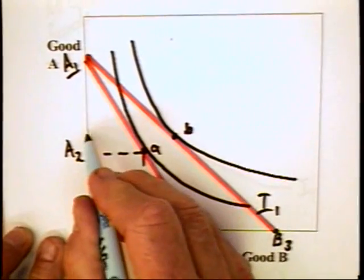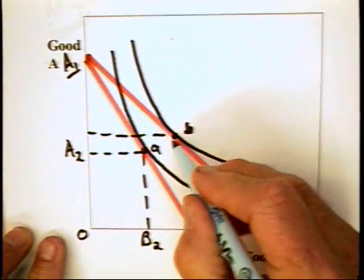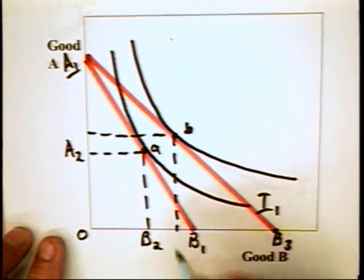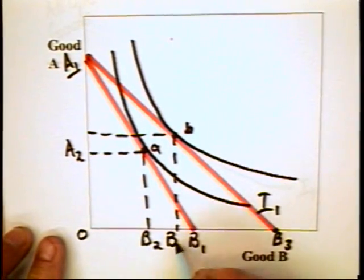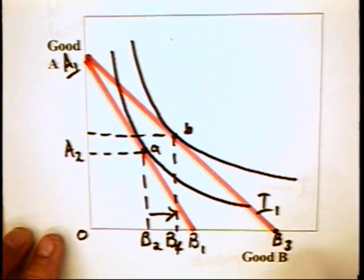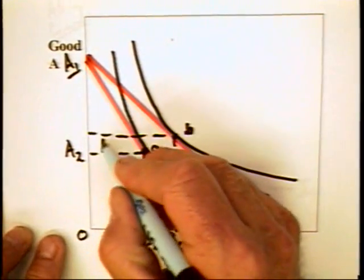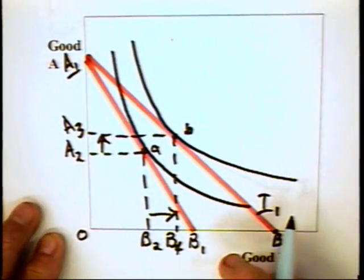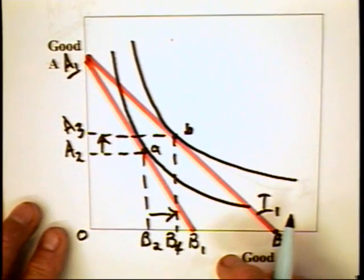In which case the individual tends to consume not only more of the subsidized good, that is the individual's consumption of the subsidized good B goes from B2 to B4, but the individual can in fact consume more of the unsubsidized good.